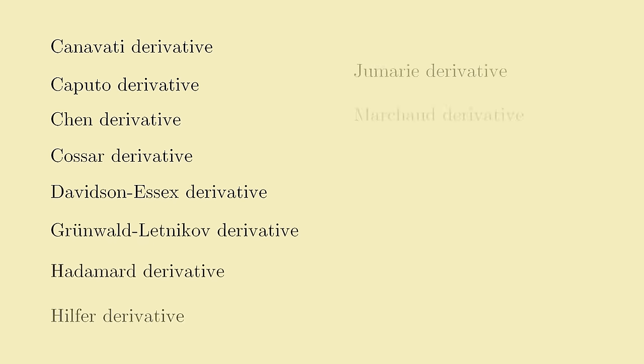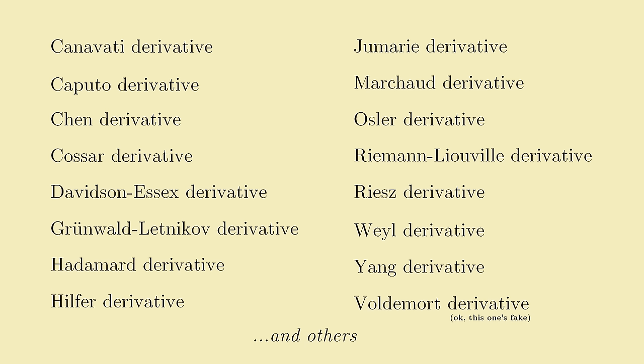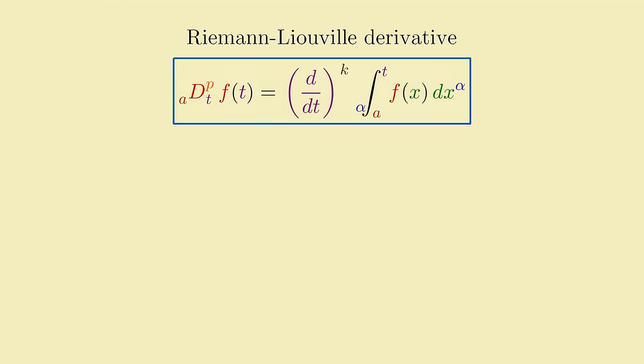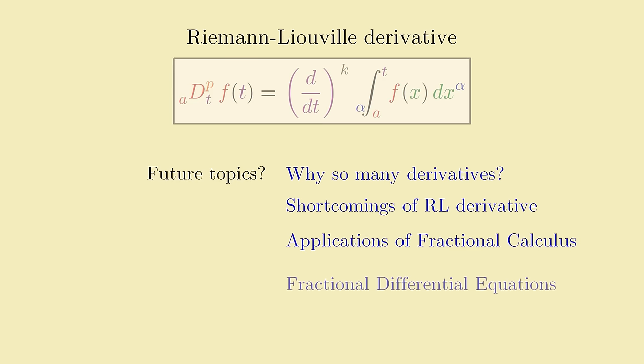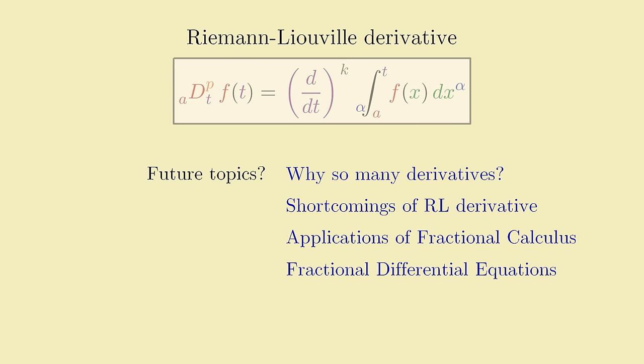But it gets worse. It turns out there's a whole slew of different formulations for fractional derivatives, and there's no definitive version. The one I've showcased in this video, the Riemann-Liouville derivative, is one of the more well-known ones, but it has some shortcomings that I didn't have time to mention here. Maybe in a future video, we'll go over more of this and why alternative definitions like Caputo's were devised.